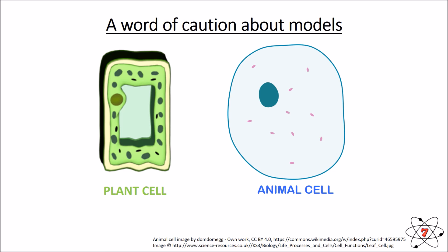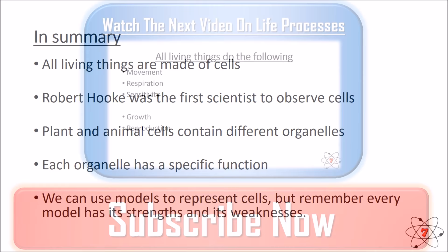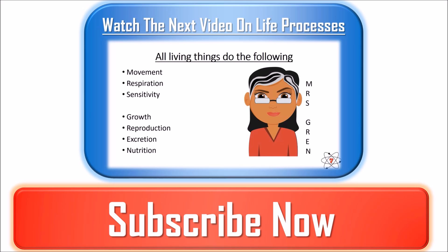Let's summarise what we've learnt today. Everything that's living is made out of cells. Robert Hooke discovered the first cells and observed them. Plant and animal cells all contain different organelles, and each organelle has a specific function. We use models to represent cells, but every model has its own strengths and weaknesses — it's up to you as a scientist to decide. Don't forget to use the resources to help your learning, and if there's anything you didn't understand, write in the comments. Thank you for watching — I hope you've enjoyed this lesson on cells. Don't forget to watch the next video on the life processes. Keep learning.